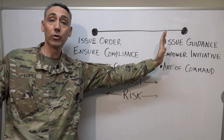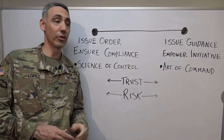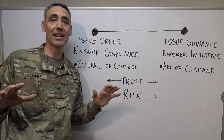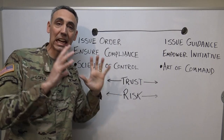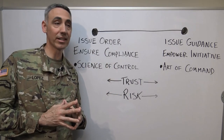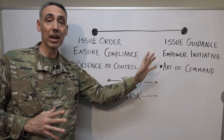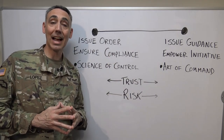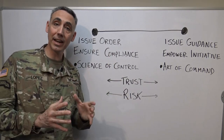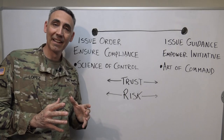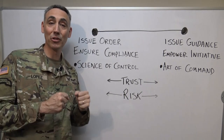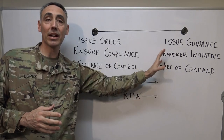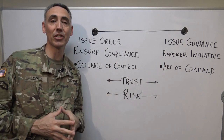Number six: maintain communication. Remember listening — you've got to have communication up and down. In order to operate on the empowerment side, you can't just put out one order and that's it. We have to constantly communicate to our subordinates to stay on the right side of this spectrum.